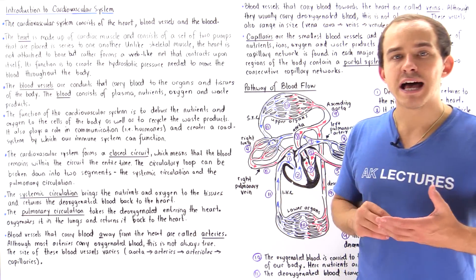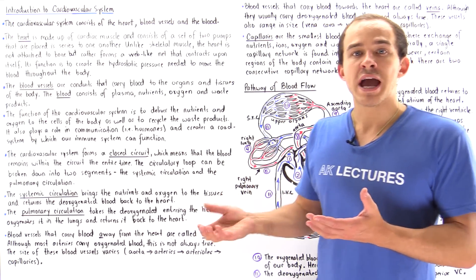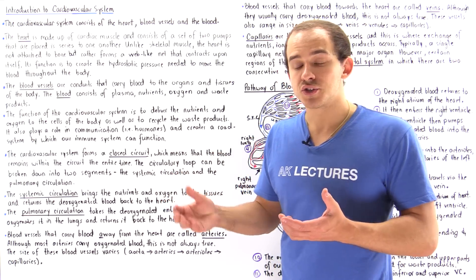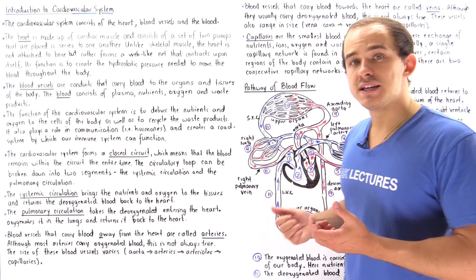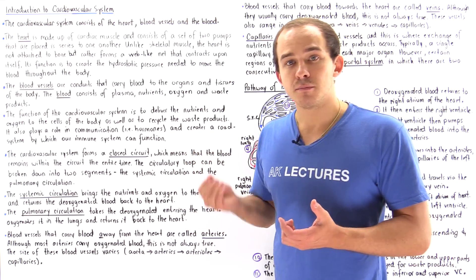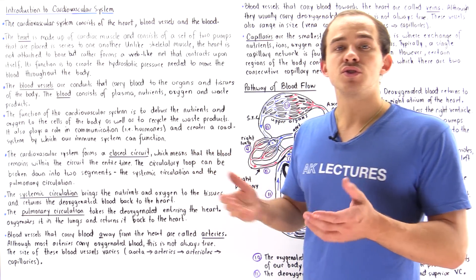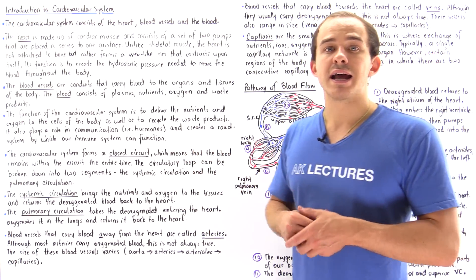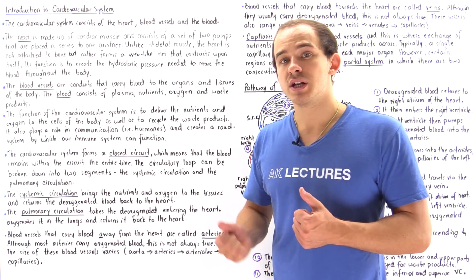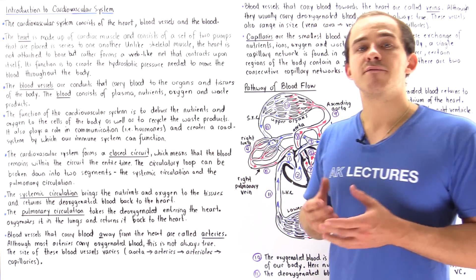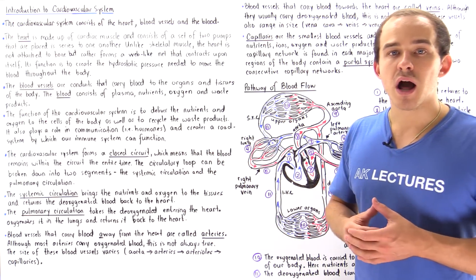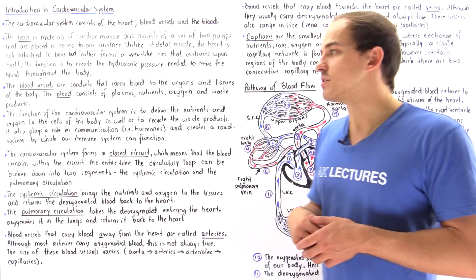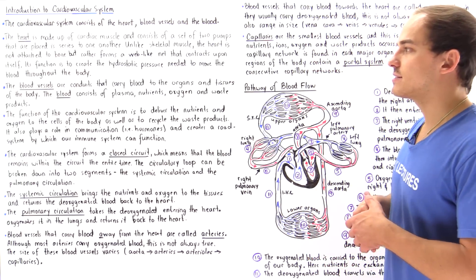Blood is a fluid-like substance that consists of many things. It contains the blood plasma, which has the ions, the electrolytes, water, as well as proteins such as albumin. We also have red blood cells inside our blood that carry the oxygen, and we have different waste products such as urea, ammonia, as well as carbon dioxide.